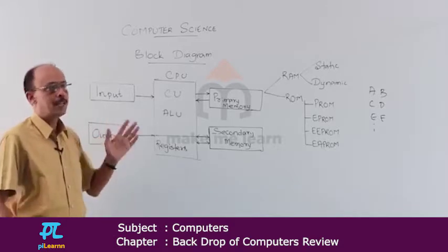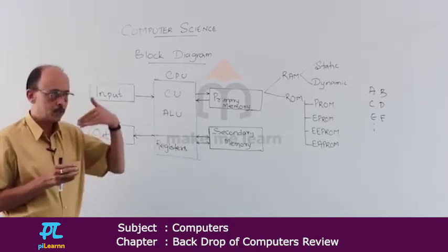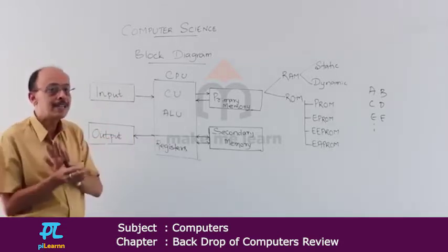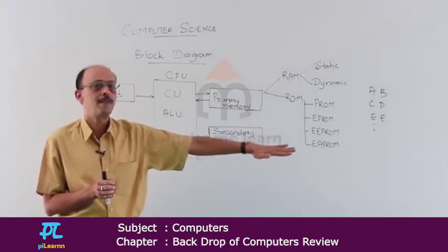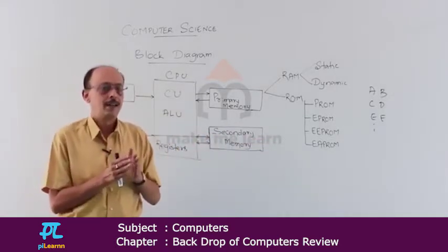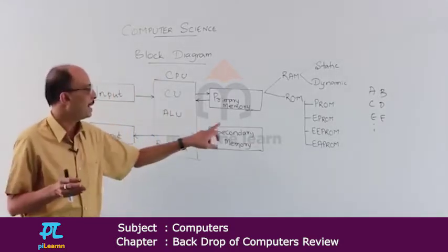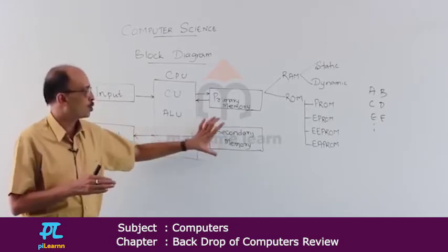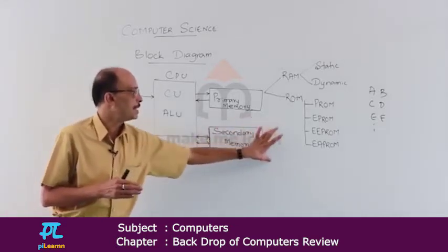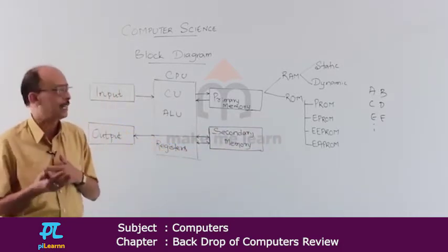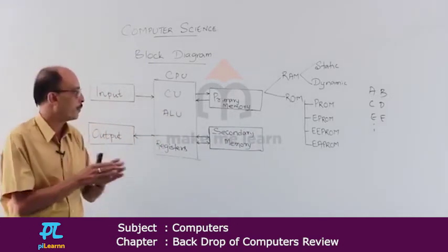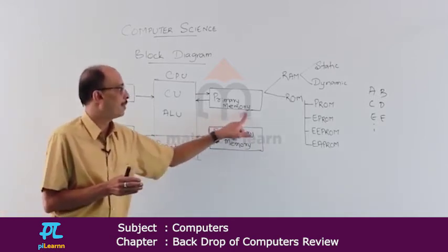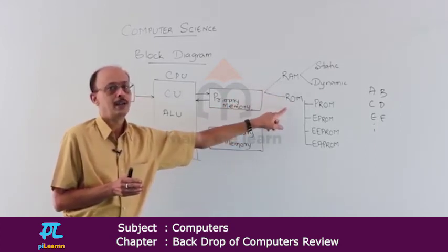The output device — the primary output device is the visual display unit. First, we get the output on screen visually. If required, it can then be sent to other output devices like a printer, floppy disk, or any other secondary memory. Data can be stored in secondary memory, and output is also stored there. Secondary memory is used for storing data permanently, while primary memory stores data temporarily. Secondary memory comes in many types, including serial or direct access types.